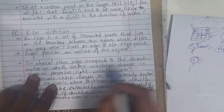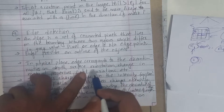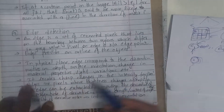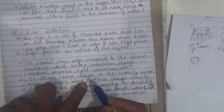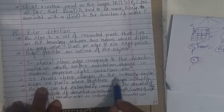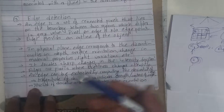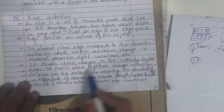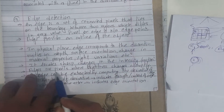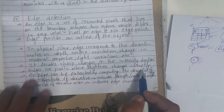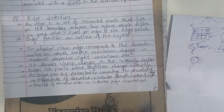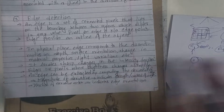Edge corresponds to the discontinuity in depth, surface orientation, the change in material properties, light variation, etc. It locates sharp changes in the intensity function. Edges are pixels where brightness changes abruptly — brightness changes intensity value.